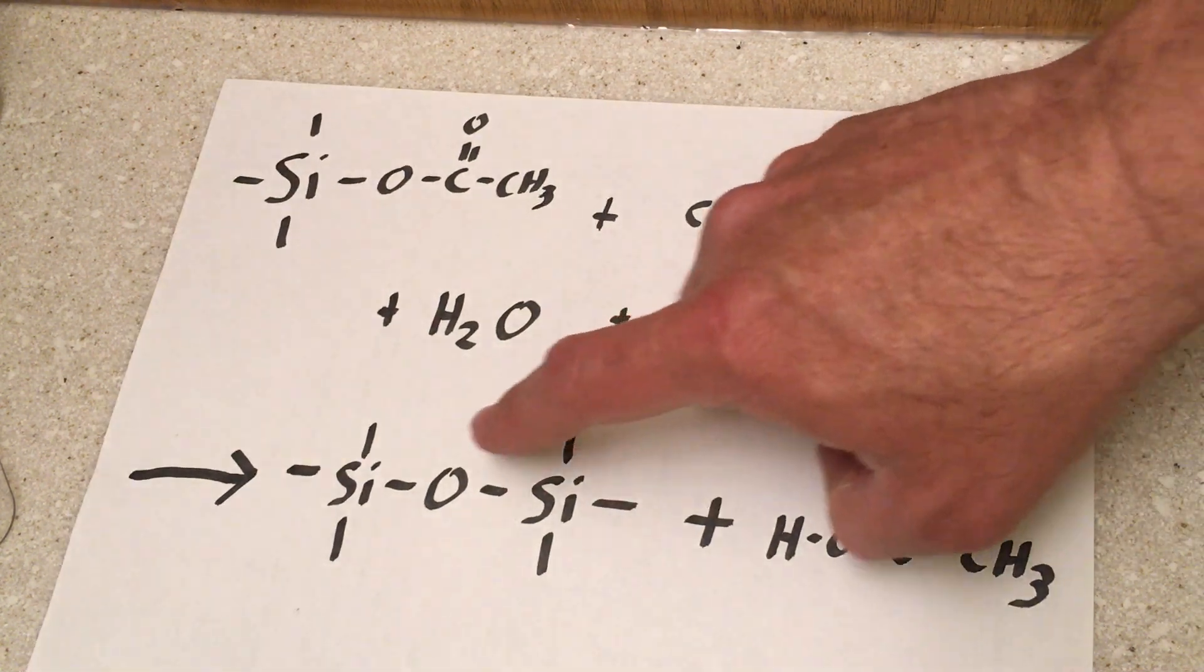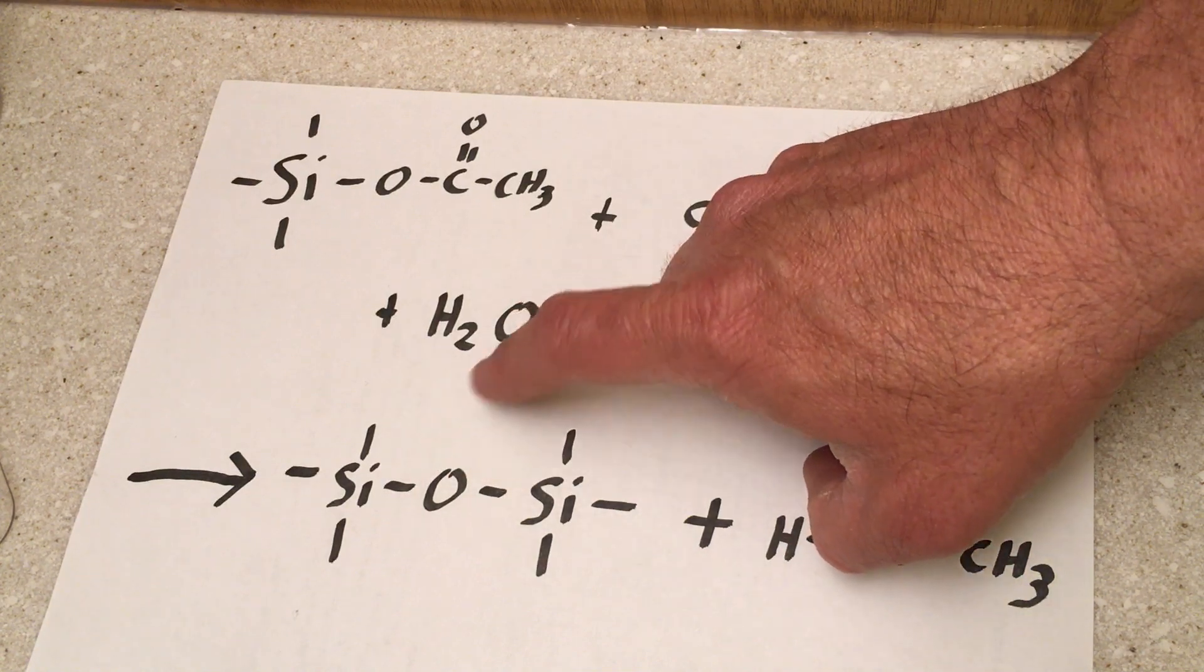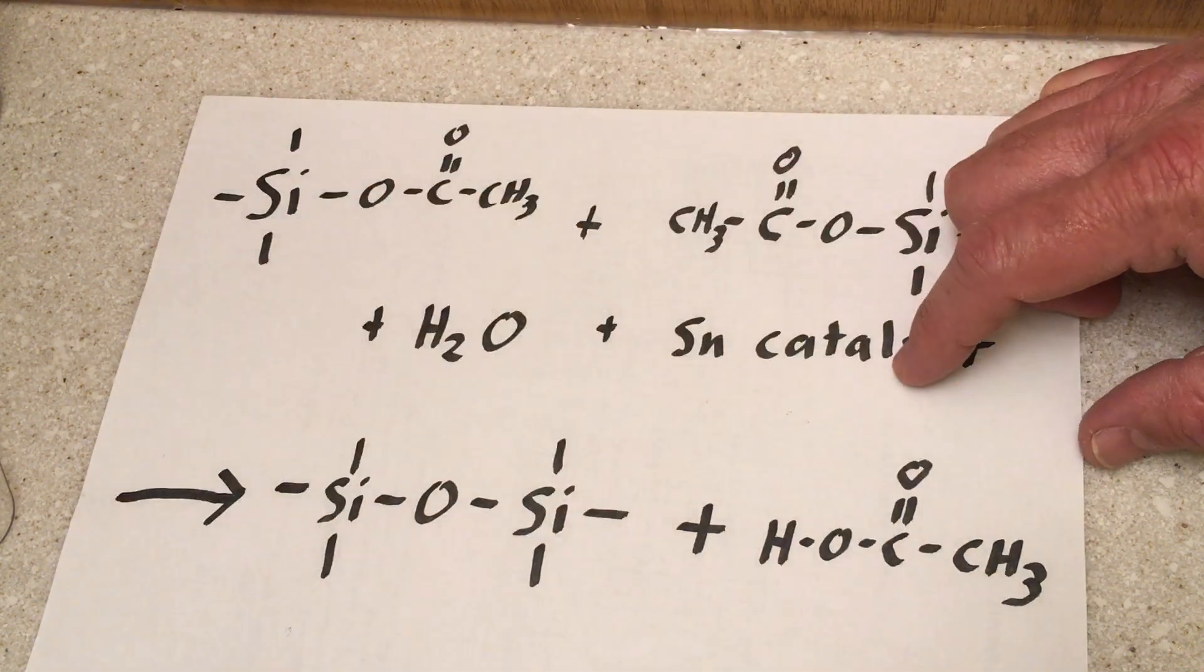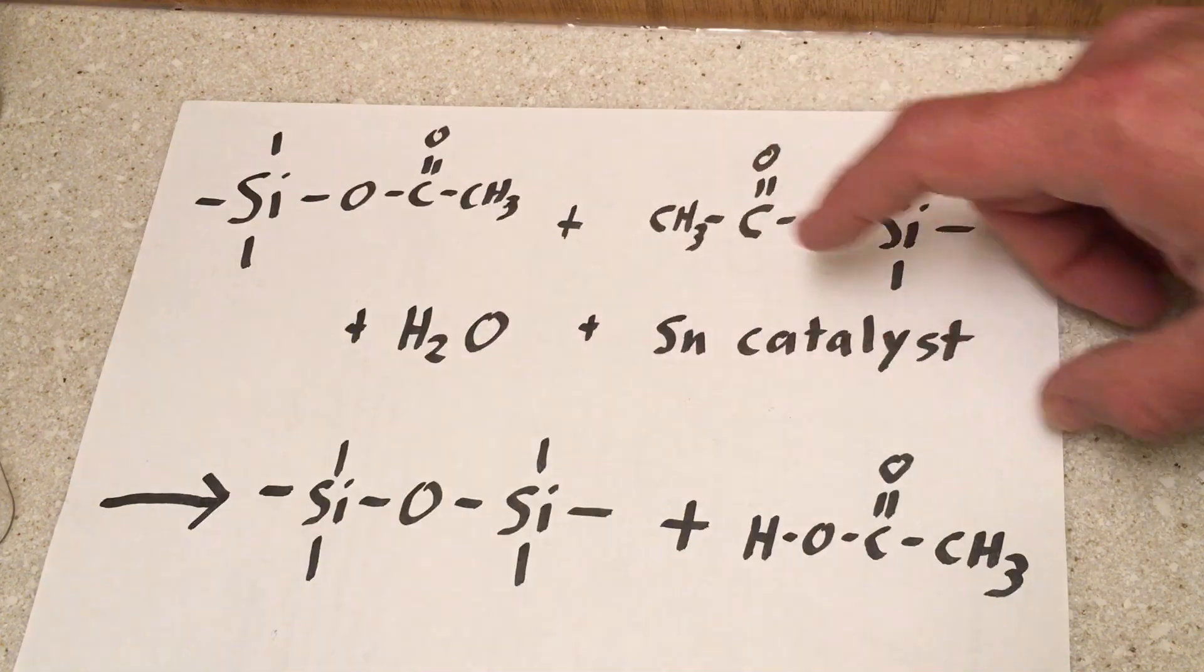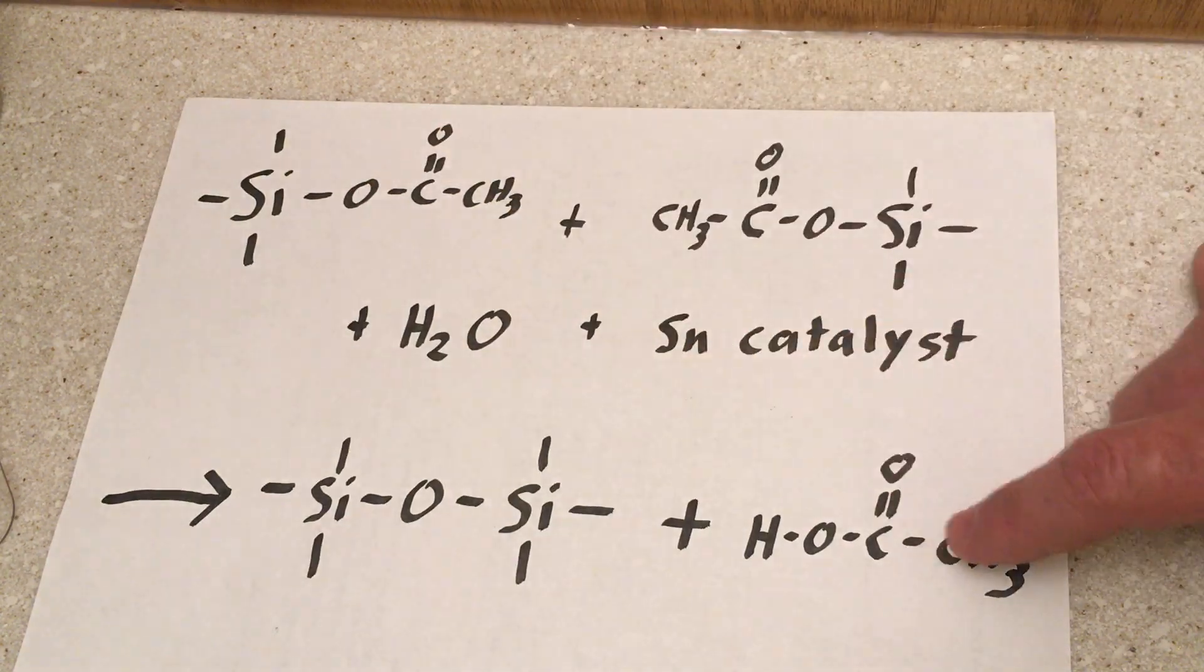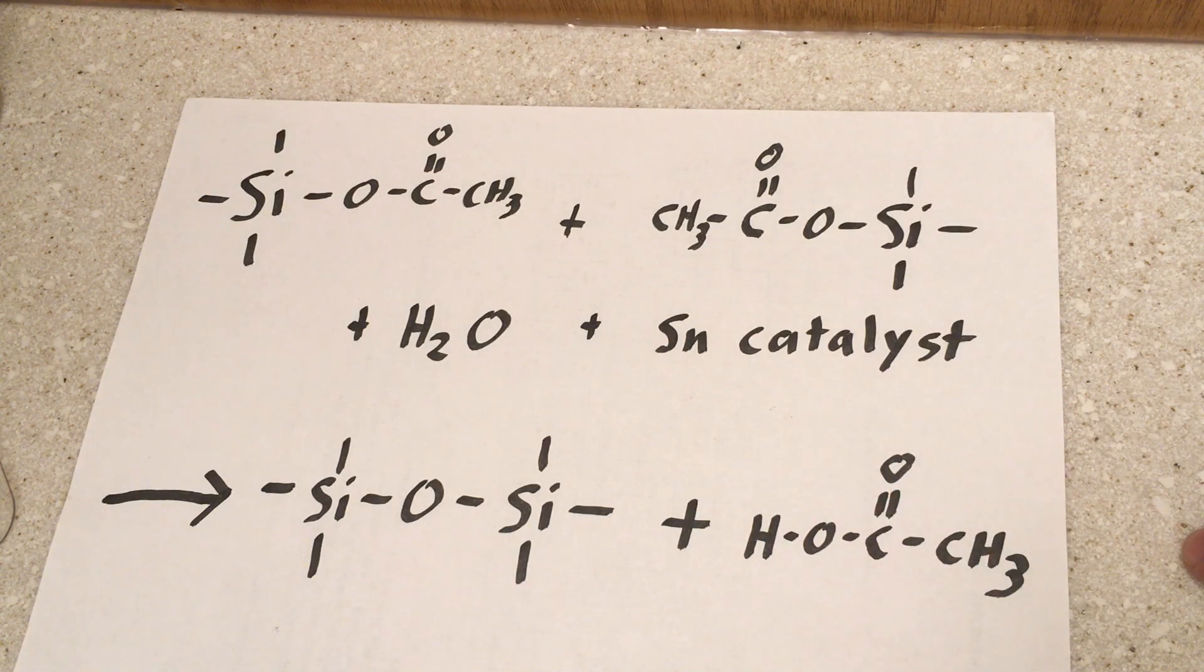And what happens is the silicon combines with the oxygen from the water and bridges over to another silicon and links these silicons together. And what happens is the hydrogens from the water attach themselves to these groups, which leave. And this is actually acetic acid.